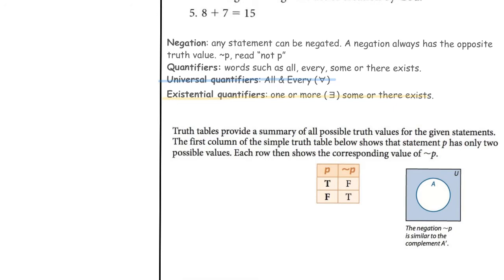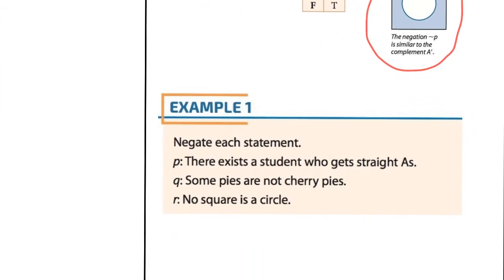I like this little display right here, this little diagram. So for the set A, if we're calling our statement P, this set A, the negation is everything within the universal set that is not in set A. Let's look at example one.